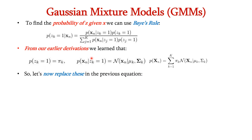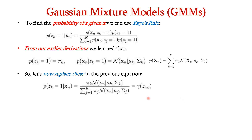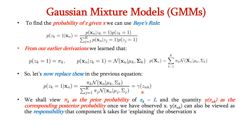Substituting from our earlier derivations, we obtain gamma(z_nk). Here pi_k is viewed as the prior probability of z_k=1, since initially we don't know the values of z and must assume them. Once the data is observed, we compute the posterior probability, gamma(z_nk), which represents the responsibility that component k takes for explaining the observation x.